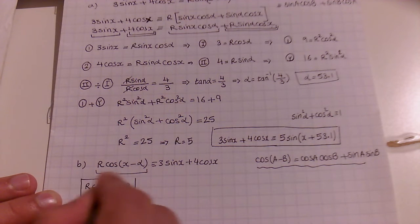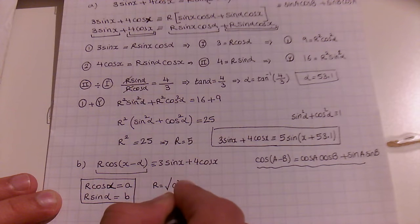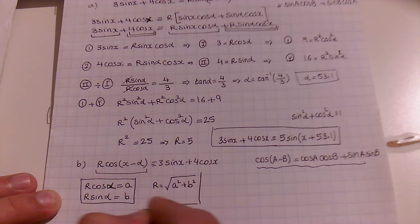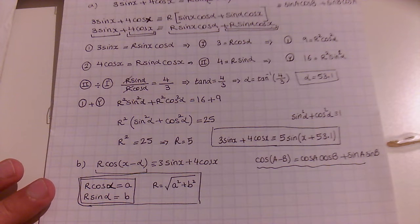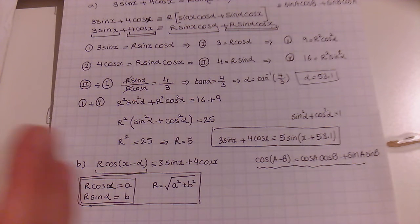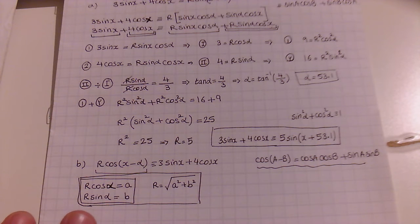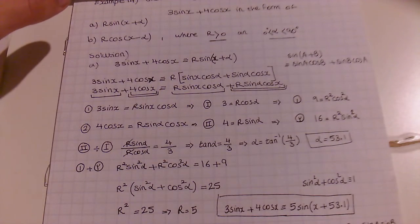Part B is very similar. I will give the final answer and leave it as homework. For part B, 3·sin(x) plus 4·cos(x) is expressed as R·cos(x − α). For this form, we need to use the cos(A − B) formula, which is cos(A)·cos(B) plus sin(A)·sin(B).